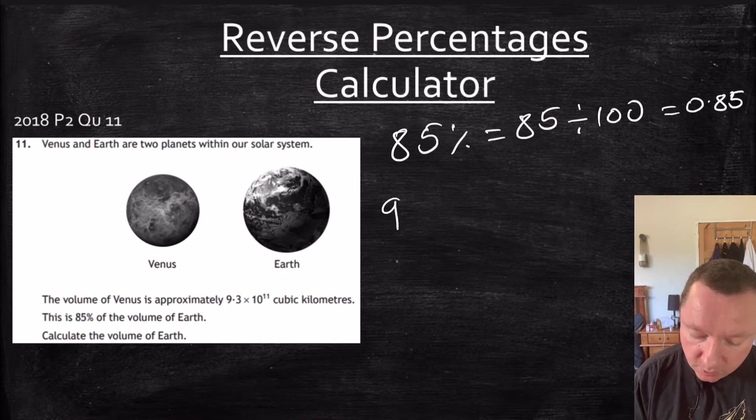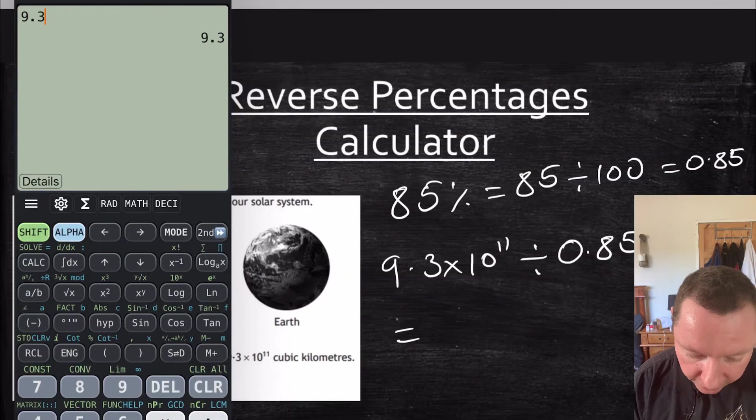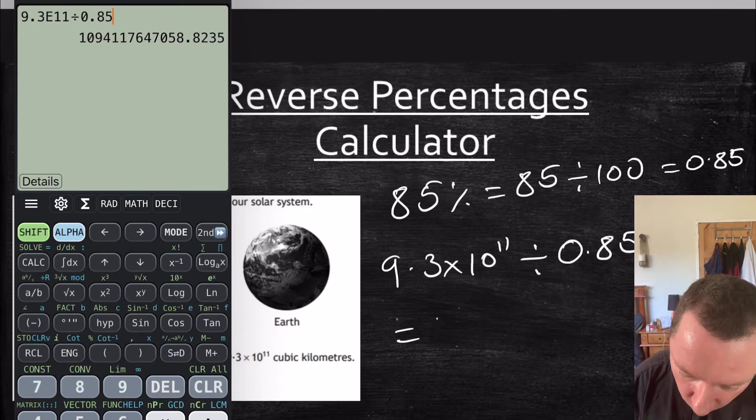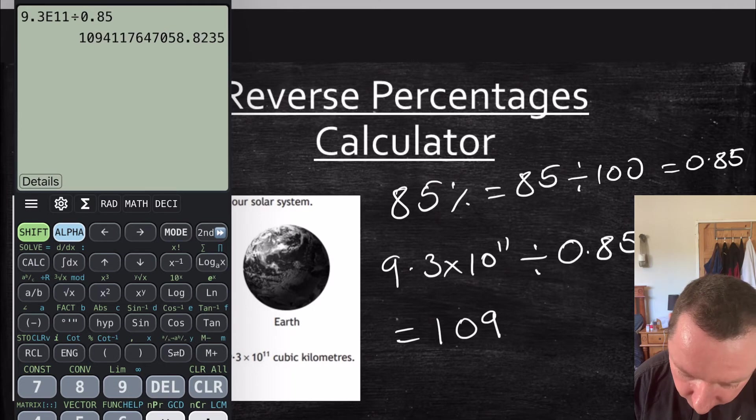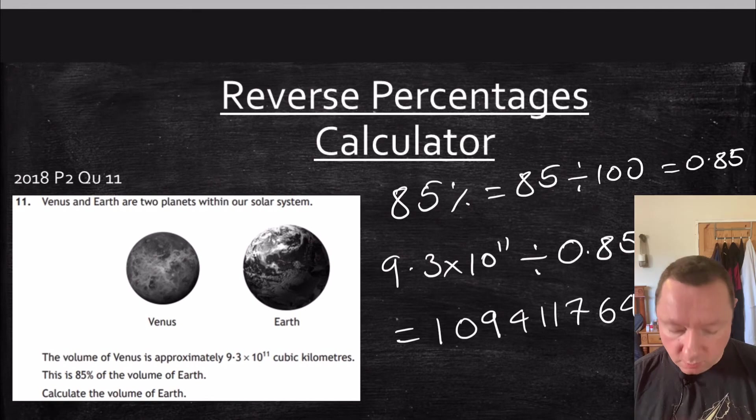So we now just take our number 9.3 times 10 to the power of 11 divided by 0.85 to get back up to 100%. 9.3 times 10 to the power of 11 divided by 0.85. And we get a huge number. So we've got 1,094,117,647,058.82. Now, it doesn't ask us to round it or anything like that. It's not a very reasonable number.